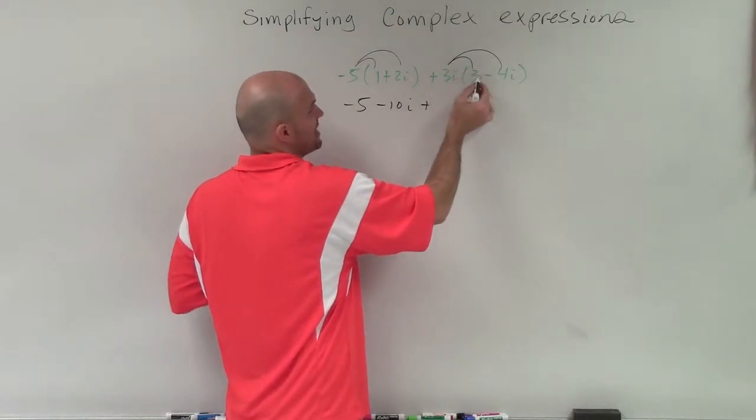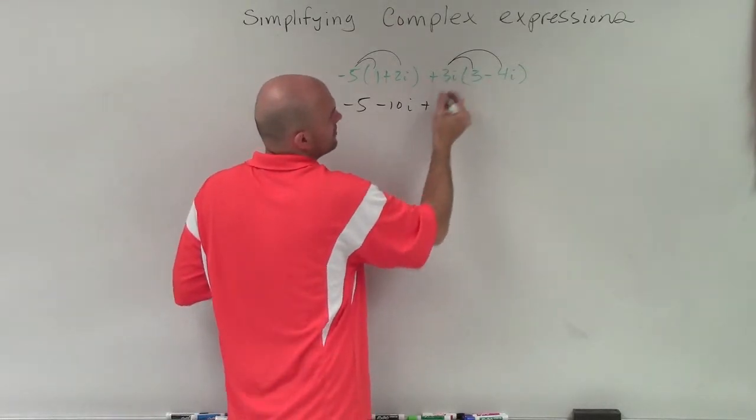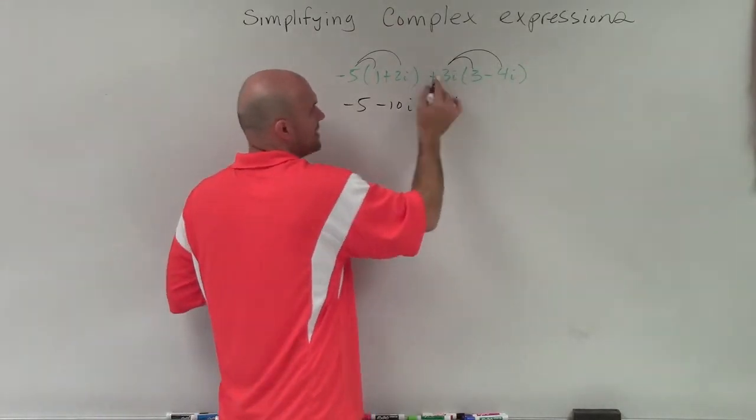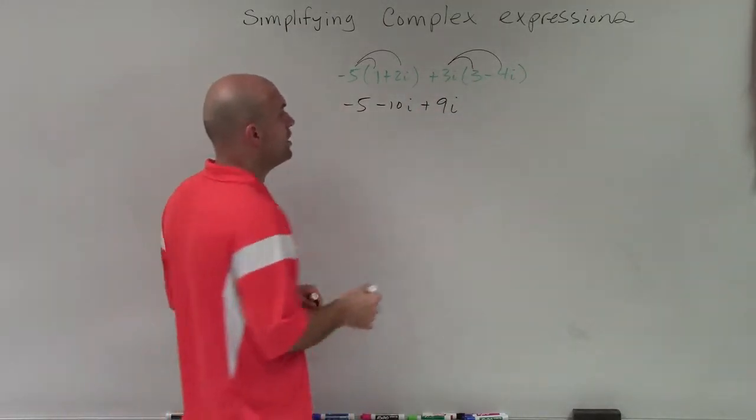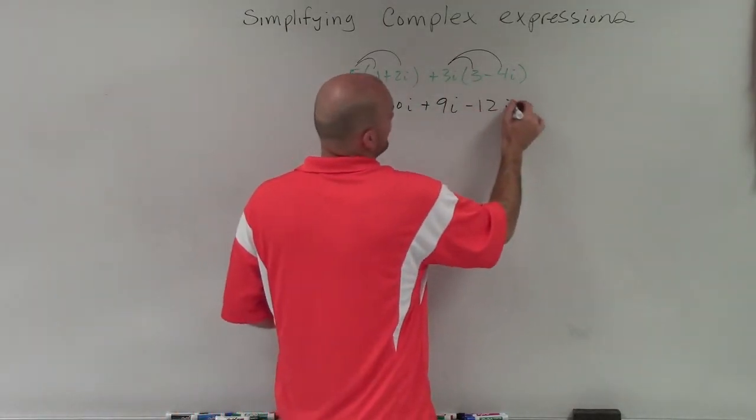Plus, positive 3i times 3 is going to be positive 9i. And positive 3i times negative 4i is going to be negative 12i squared.